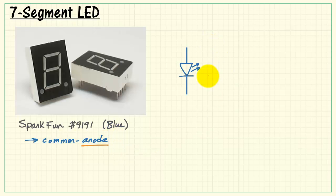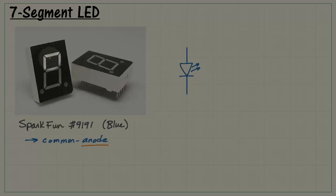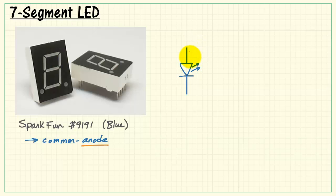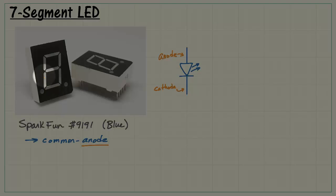Each one of the segments is an individual light-emitting diode. For example, one segment might be the individual diode here with anode and cathode. Now as you work your way around,